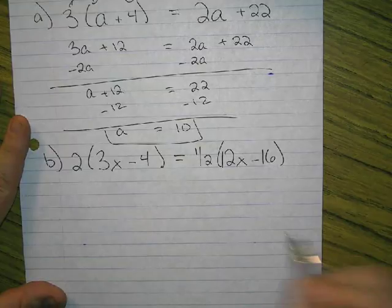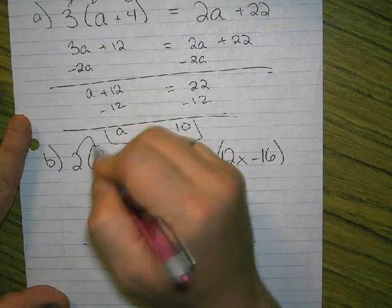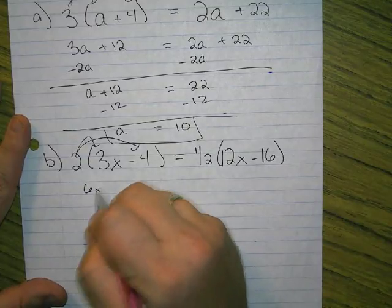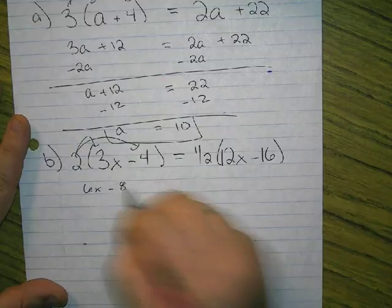All right, first thing we have to do is distribute. In this one there's distribution on both sides, so we've got to multiply 2 times both things. We go 2 times 3x, we get 6x. 2 times negative 4 is negative 8.